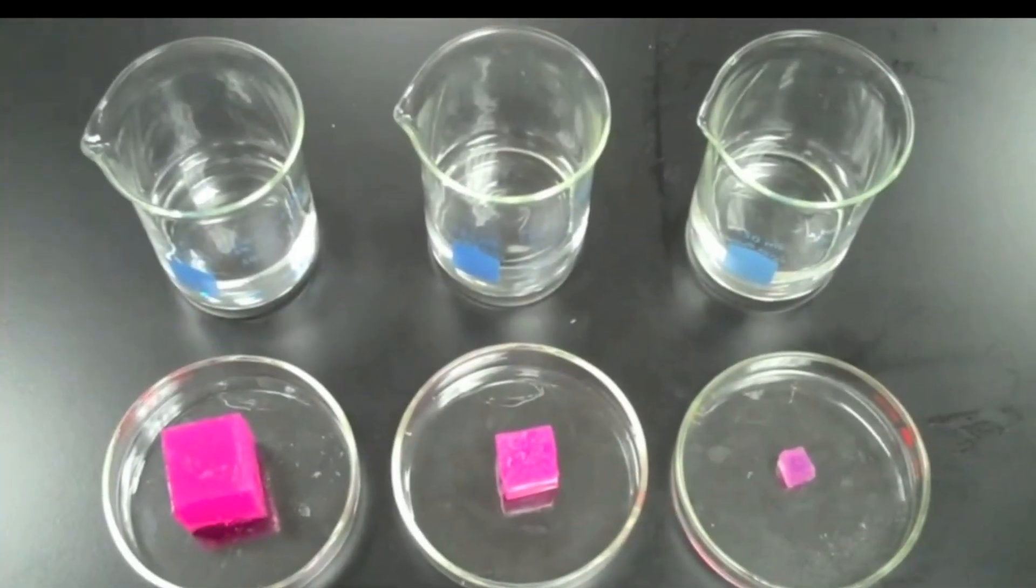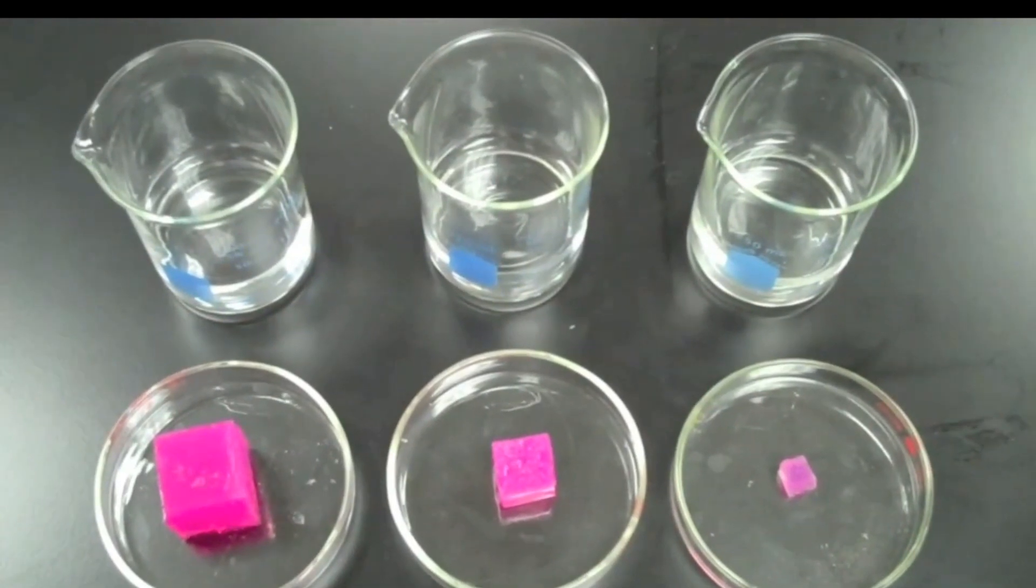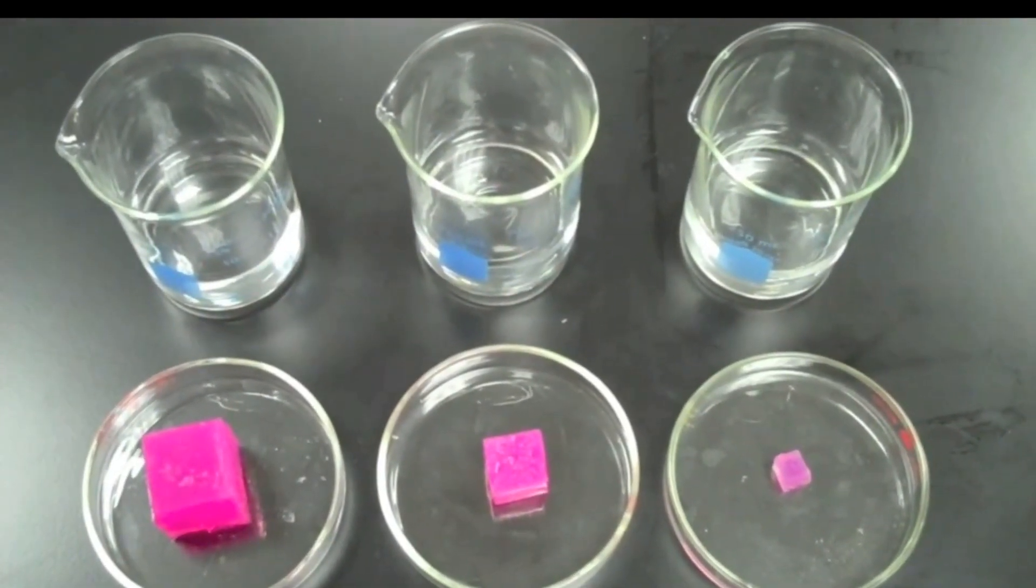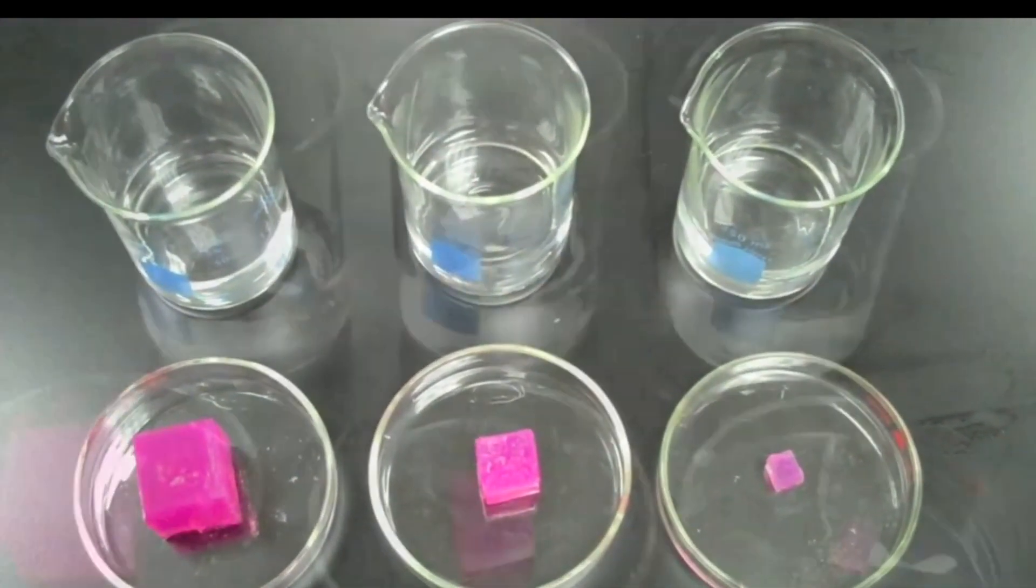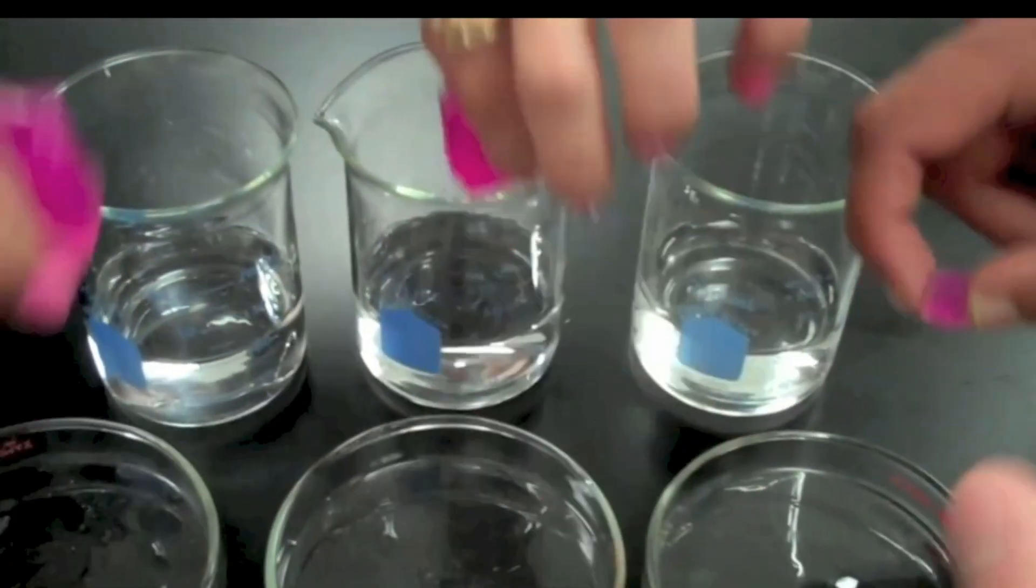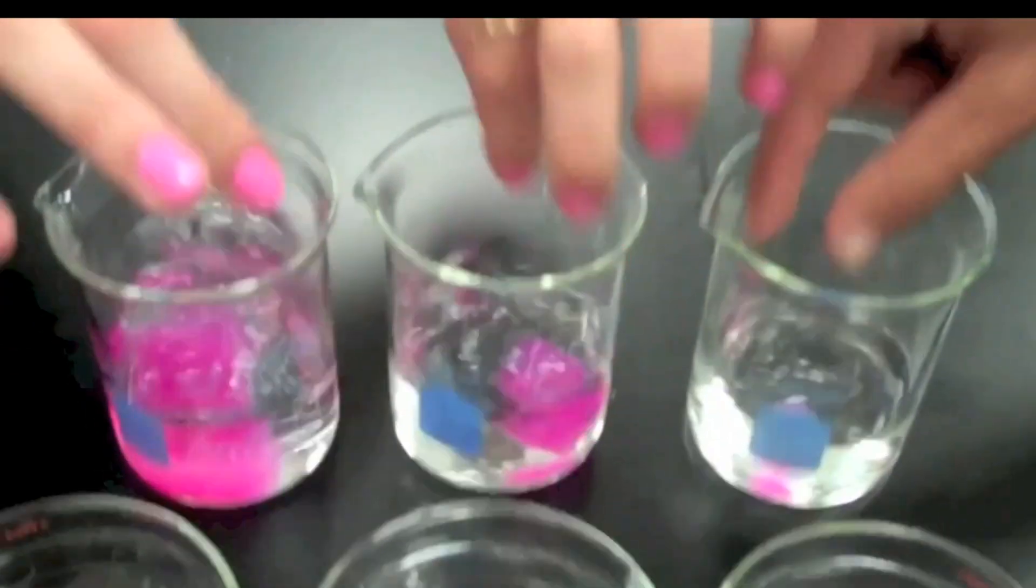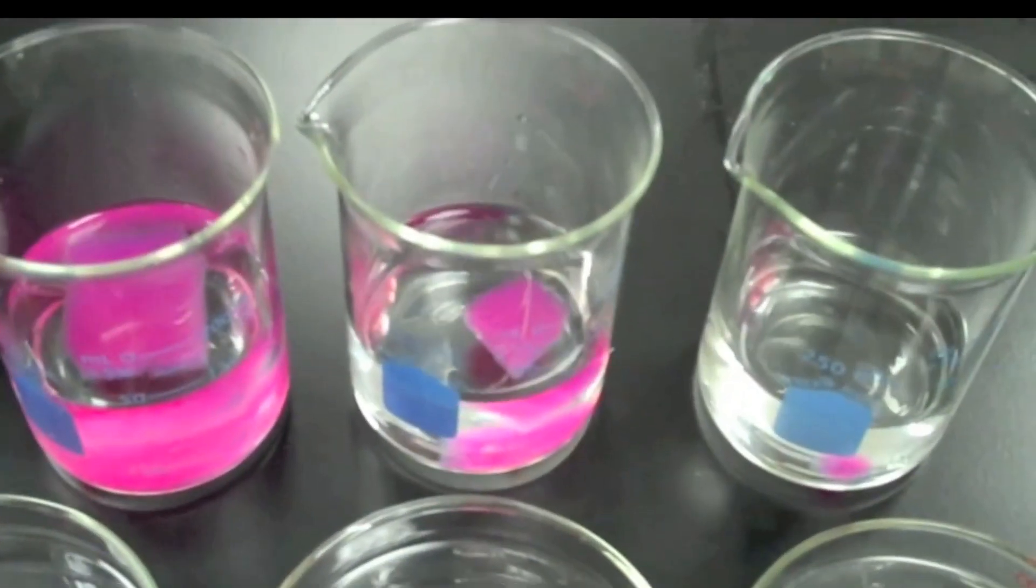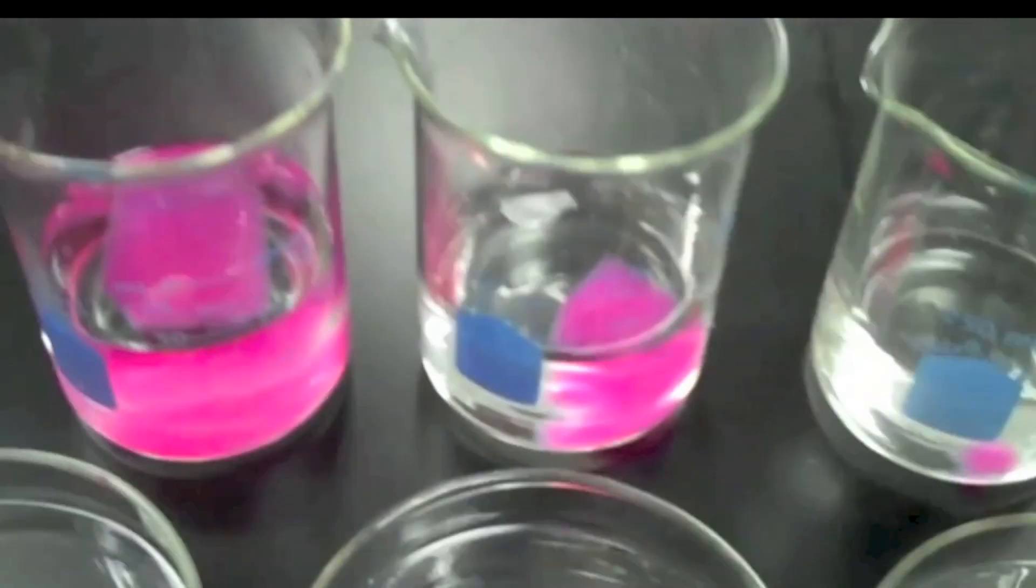Exchange of materials across the cell membrane often occurs through the process of diffusion, where dissolved molecules move from areas of high concentration to areas of low concentration. When the cubes are placed in the hydrochloric acid, the acid representing the raw materials will diffuse into the cubes, turning the indicator clear.